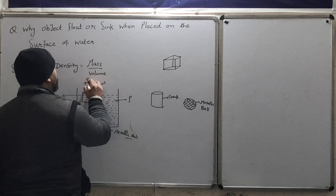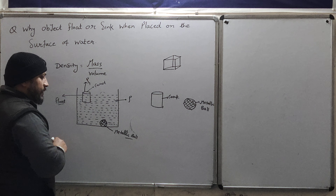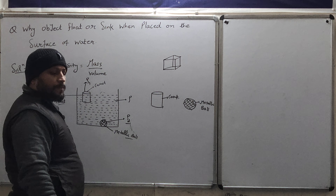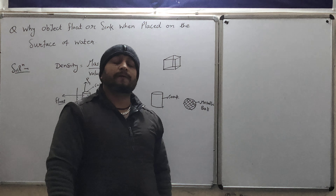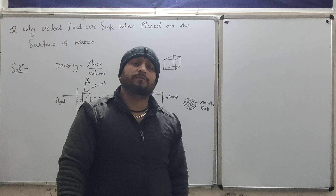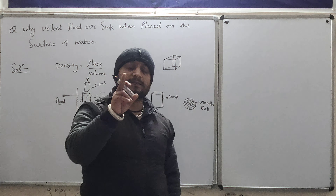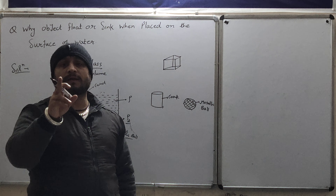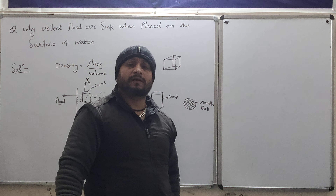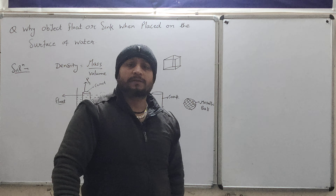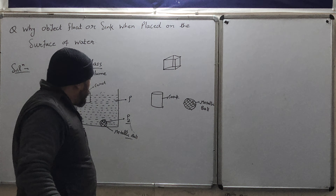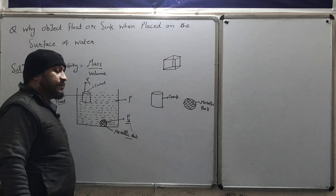Now, I had discussed a term with you — density. Density is mass upon volume, that is mass of a unit volume. If more mass is present in a small volume, density will be more; if less mass is present, density will be less. Somewhere, the concept of flotation and sinking is related to this density.